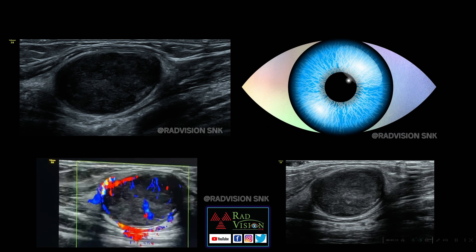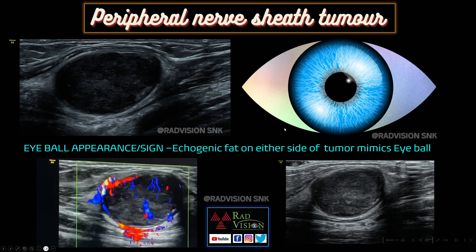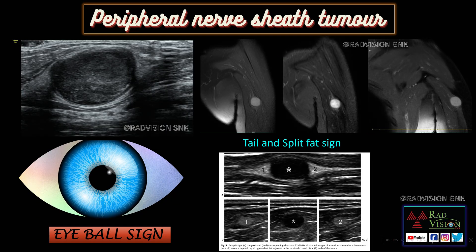The echogenic cap-like structure on either side of the lesion is the split fat sign. I have coined a new term because this echogenic cap-like structure on either side of the lesion typically mimics the sclera, with the central lesion mimicking the eyeball — so I have given the nomenclature 'eyeball sign' for peripheral nerve sheath tumors, in addition to the split fat sign and tail sign. The split fat sign is classically seen on MRI.